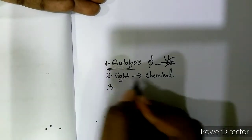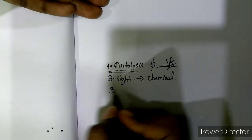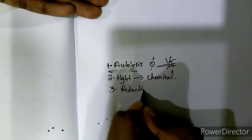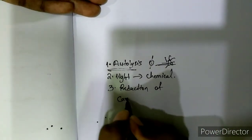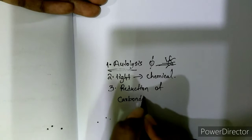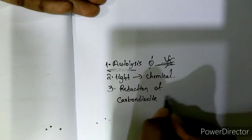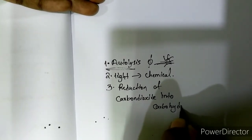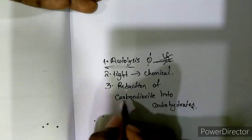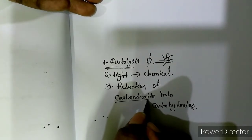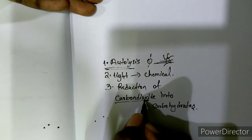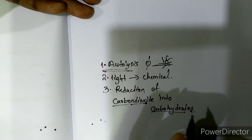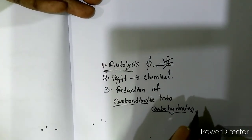The second function of chloroplast is it converts light energy into chemical energy. The third function is reduction of carbon dioxide into carbohydrates — plants use carbon dioxide in the process of photosynthesis and convert it into carbohydrates. These are the three main functions of chloroplast.